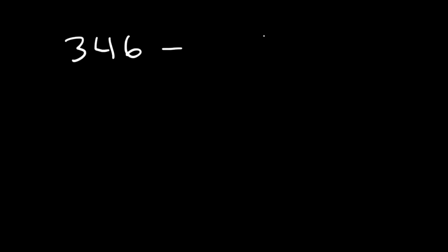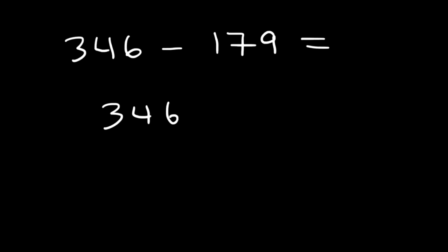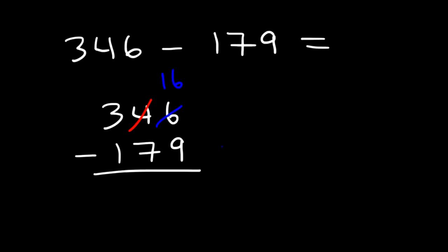Let's try another example: 346 minus 179. 6 minus 9 is a negative number, so let's borrow a 1 — giving us 16. 16 minus 9 is 7, and the 4 is now a 3. But 3 minus 7 is still negative, so we borrow again: 13 minus 7 is 6, and the 3 becomes 2. 2 minus 1 is 1. So 346 minus 179 is equal to 167.